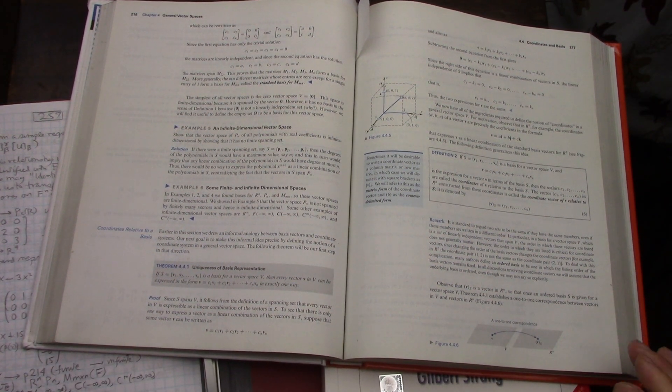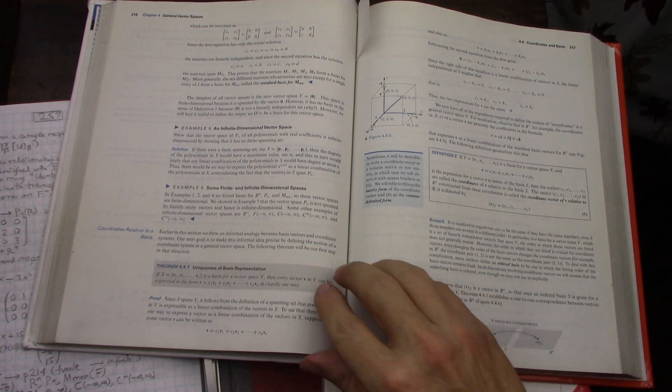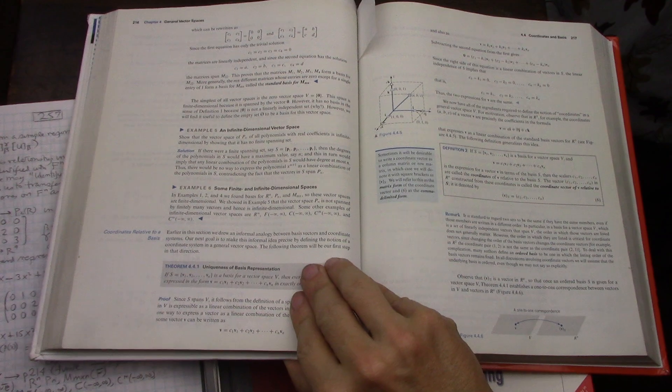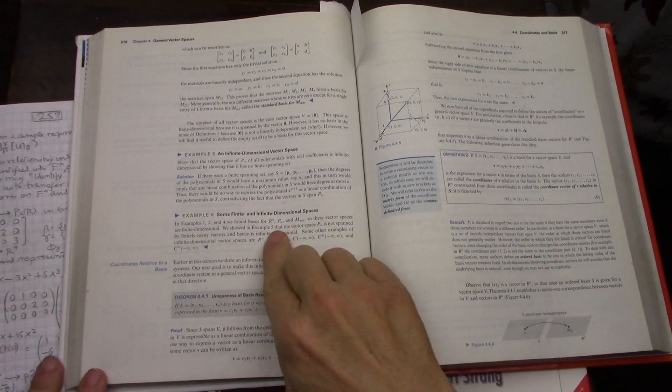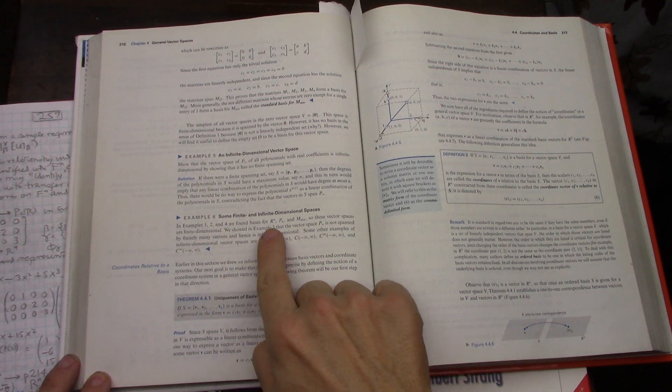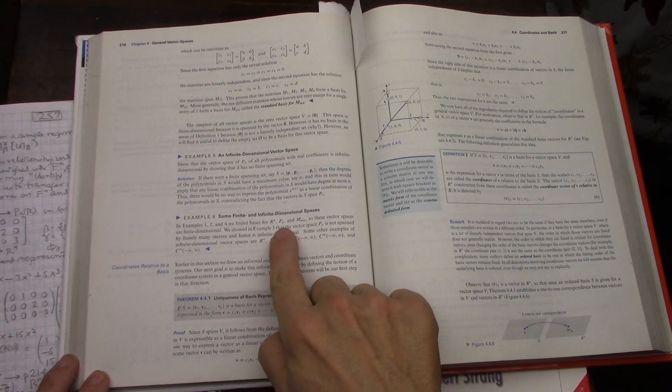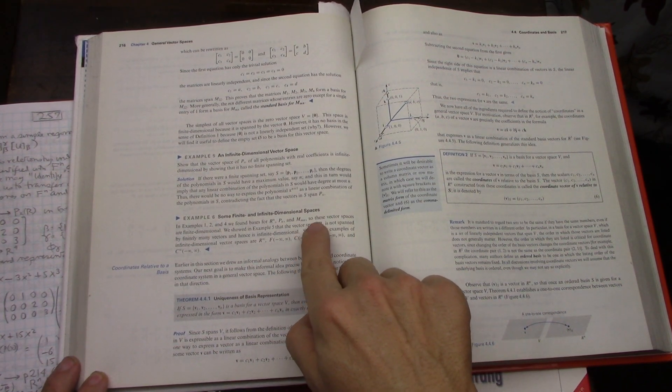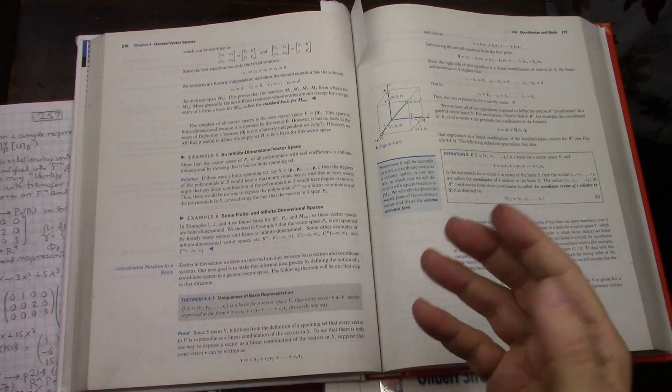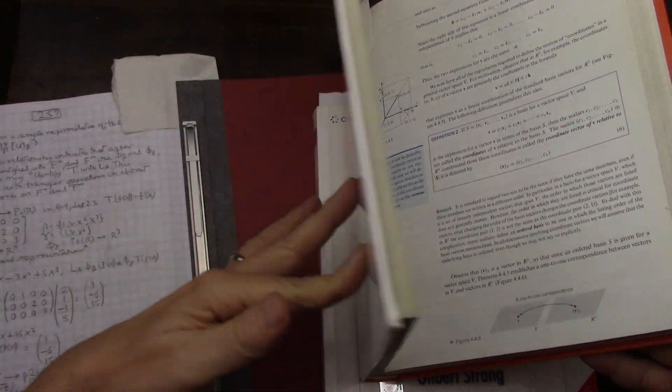Yeah, and so then in example six of page 216, we're right here, he'll show R to the N, basis for R to the N, basis for P the polynomials, and then the M by N matrices, and line them all up in examples. All right, I think we're done with Anton.